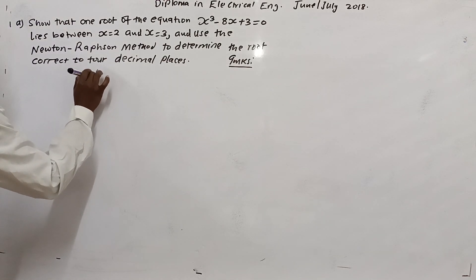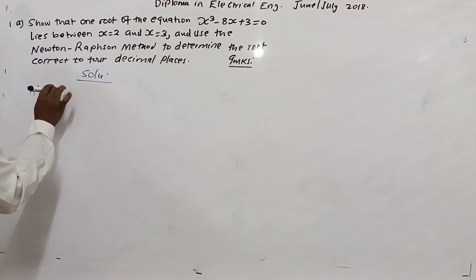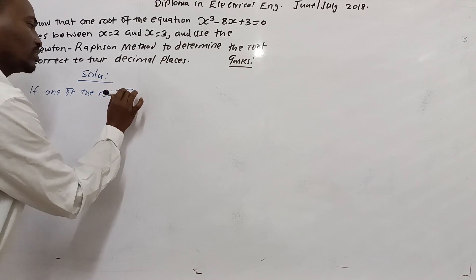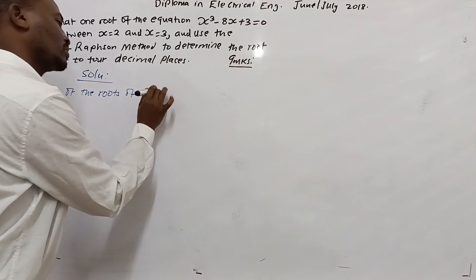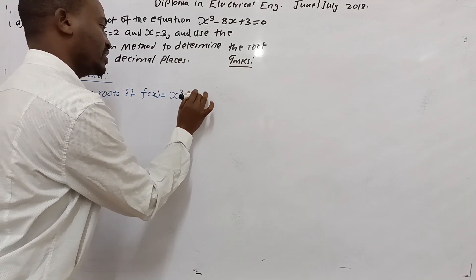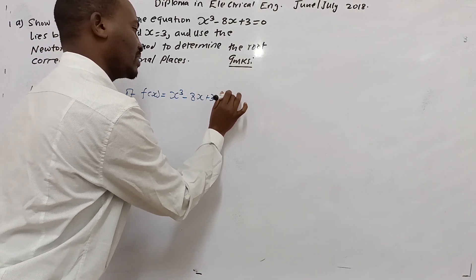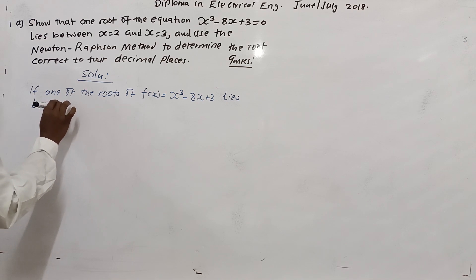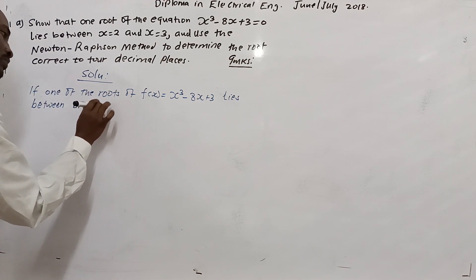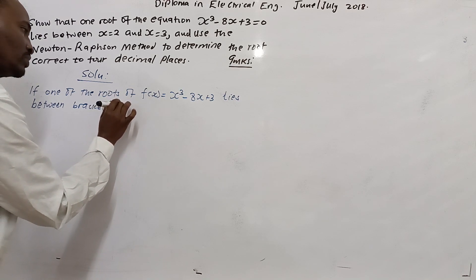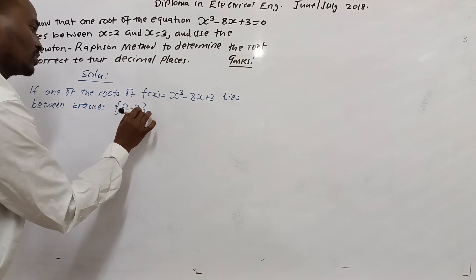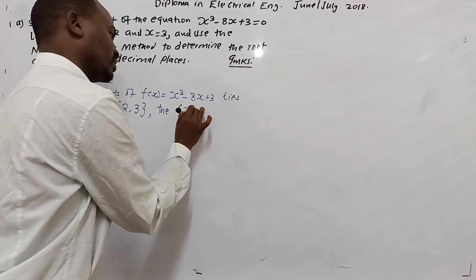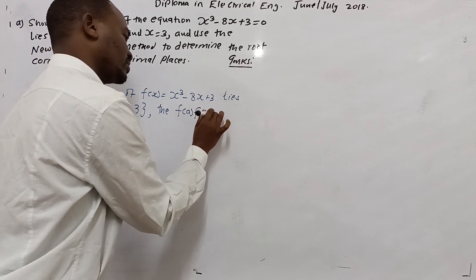What we should know is that if one of the roots of f(x) = x³ - 8x + 3 lies between a bracket, then the product of f(a) and f(b) should be less than zero.